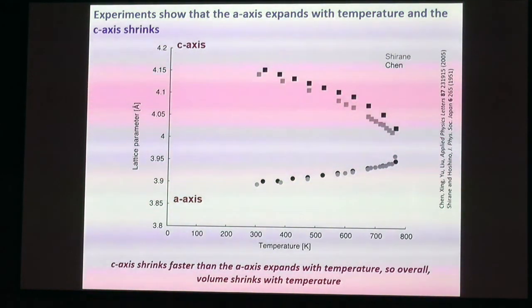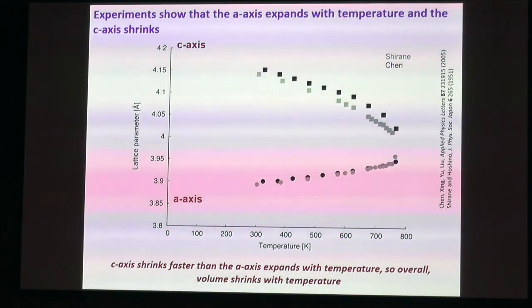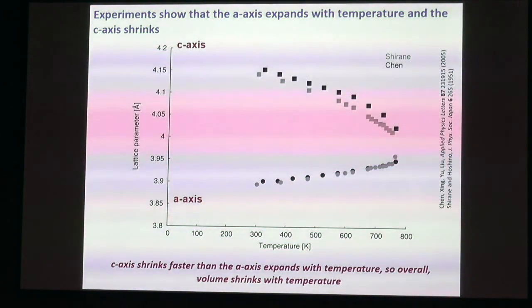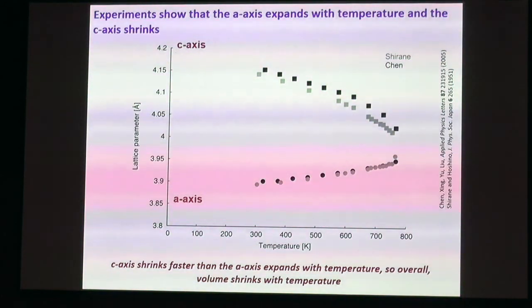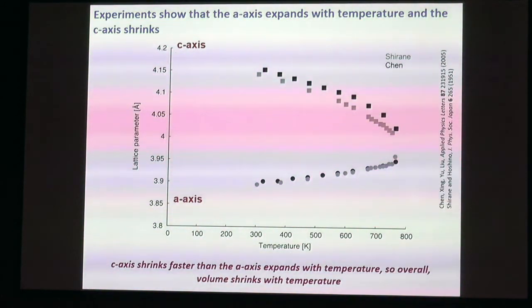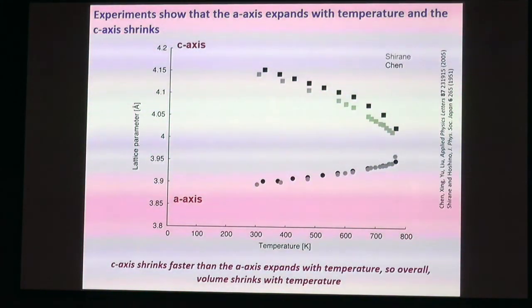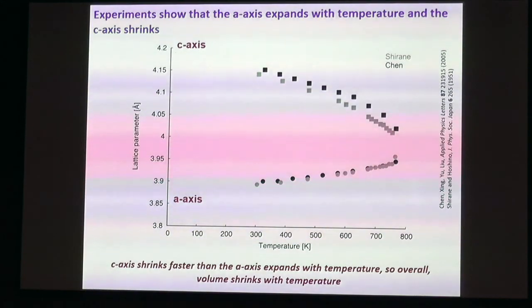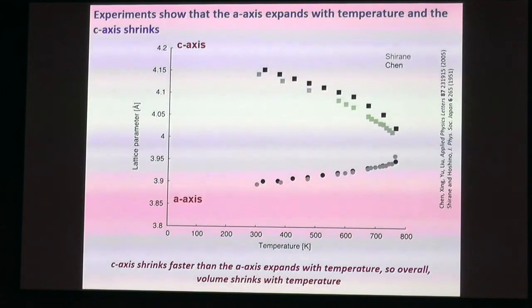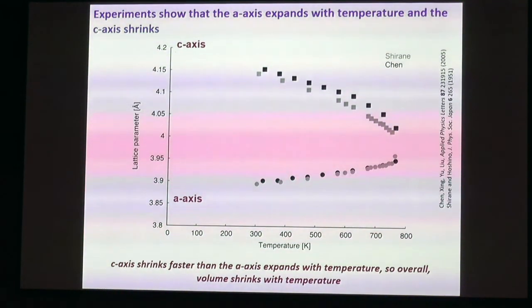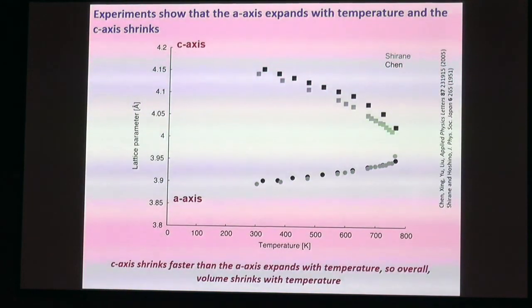The first step was to see if we could reproduce the experimentally observed changes in lattice parameters with temperature. Data from two different experiments show that the c-axis shrinks with temperature and the a-axis expands, but the c-axis shrinks faster than the a-axis expands, so overall the volume shrinks with temperature. Can we reproduce this qualitatively with density functional theory?